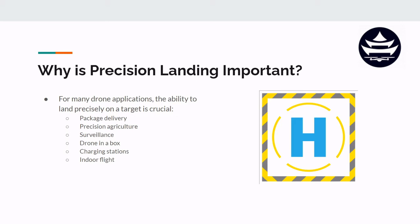Maybe drone-in-a-box applications where the drone leaves its charging station, does its mission, and must return into the box — in order to do that it needs a very precise landing methodology. And indoor flight — GPS has plus or minus 10 feet accuracy, but indoors you don't even have GPS, so you would 100% need some form of precision landing to actually land the drone indoors.